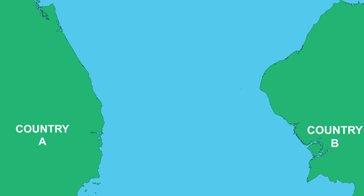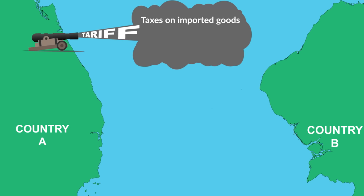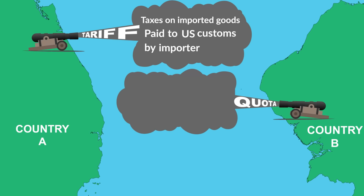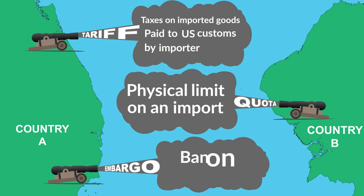Trade can also become aggressive. A country may try to protect certain domestic industries from foreign competition by restricting imports. When two nations retaliate against each other with escalating trade restrictions, it's often called a trade war. There are a few common weapons in a trade war. Tariffs are taxes on imported goods; in the United States, tariffs are paid to U.S. customs by the U.S.-registered firm importing the goods, though the cost is often passed along to the consumer through price increases. Another weapon is a quota — a physical limit on how much of a particular good can be imported. One of the most extreme trade war weapons is an embargo, a partial or complete ban on trading with a country.